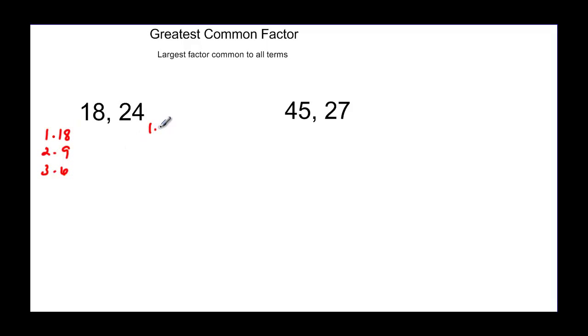And 24 would be 1 times 24, and 2 times 12, and 3 times 8, and 4 times 6, and then it would be 6 times 4. Again, we've already, now we're working our way back the other direction. So we're looking to compare what they have greatest in common. They both have 1, and they both have 2, and they both have 3, and they both have 6. And after 6, there's really nothing else in common. 24 doesn't have 18 or 9, so the greatest common factor here is equal to 6.